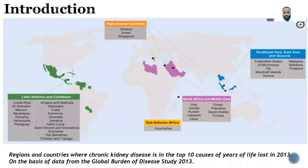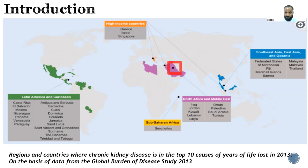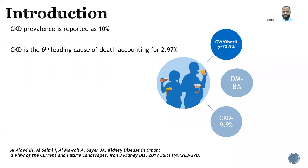Looking at global burden of disease figures, this picture shows areas where chronic kidney disease is among the top ten causes of loss of life as reported in 2013. Oman is one of those countries where kidney disease mortality is in the top ten causes of years of life lost. I found one very important work by Al-Alawi reported in Iran's Journal of Kidney Disease on the current and future landscape of kidney disease in Oman, which reported CKD as 10% of the population and as the sixth leading cause of death, accounting for 2.9%.